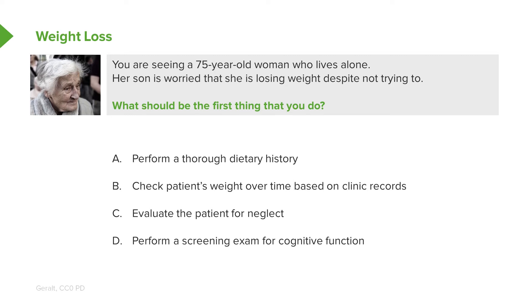These are all could be correct answers. This is really more of my bias, but I want a little objective data as to what's going on. So I would check B. It's kind of like the newborn when you're worried about failure to thrive — the first thing you do is go to the record and actually see, well, is this a real result? Here, let's see if the patient is actually losing weight, because a lot of times I'll go back and six months ago they had the exact same weight, or sometimes they've actually gained some weight in the interim.